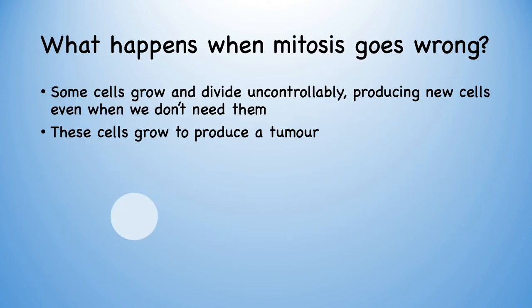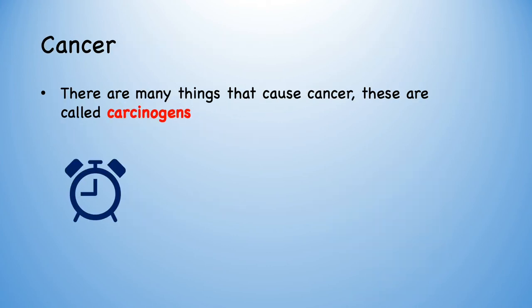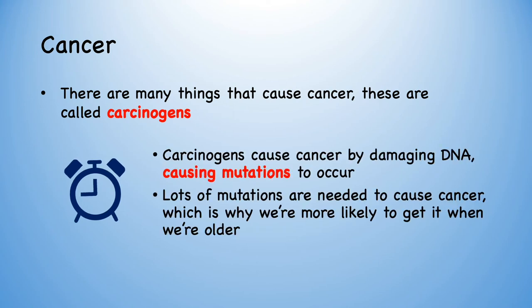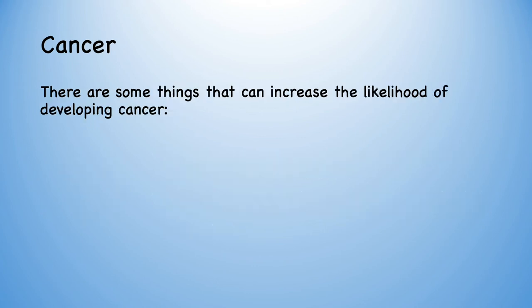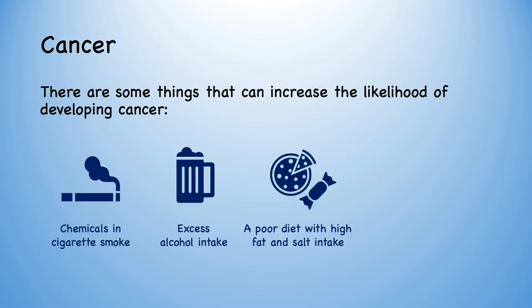So what happens when mitosis goes wrong? Some cells grow and divide uncontrollably, producing new cells even when we don't need them. These cells can continue growing to produce a tumour. Some tumours can become cancerous. This is caused by carcinogens which damage DNA, causing mutations to occur. Lots of mutations are needed for cancer to occur, hence why we're more likely to develop it when we're older. Carcinogens include the chemicals in cigarette smoke, excess alcohol intake, a poor diet high in fat and salt, and exposure to radiation including UV light from the sun — which is why we should always wear sun cream when we're outside.